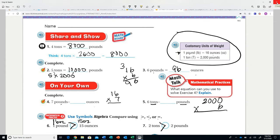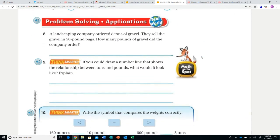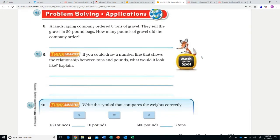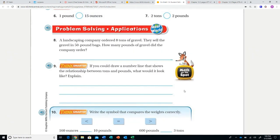Question number eight: a landscaping company ordered eight tons of gravel. They sell the gravel in 50-pound bags. How many pounds of gravel did the company order? So first off, what's important, what information do we need?